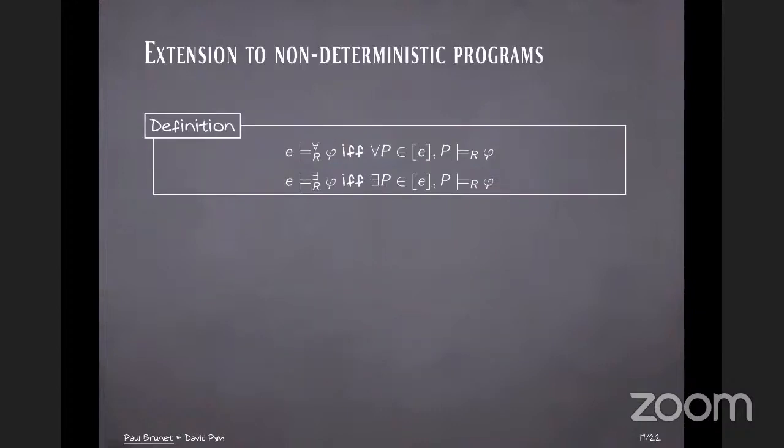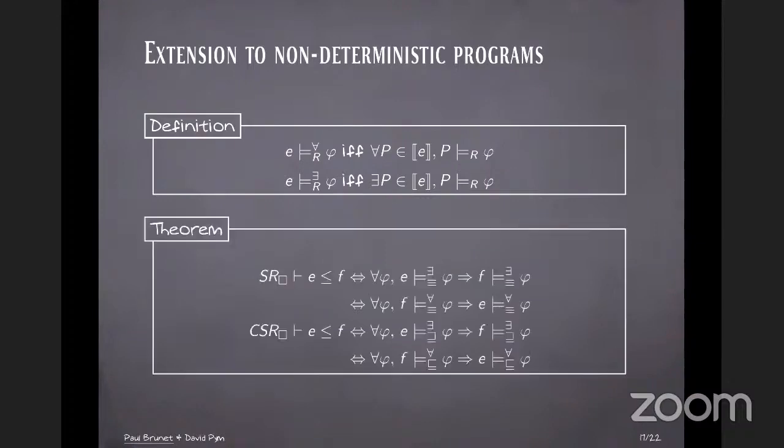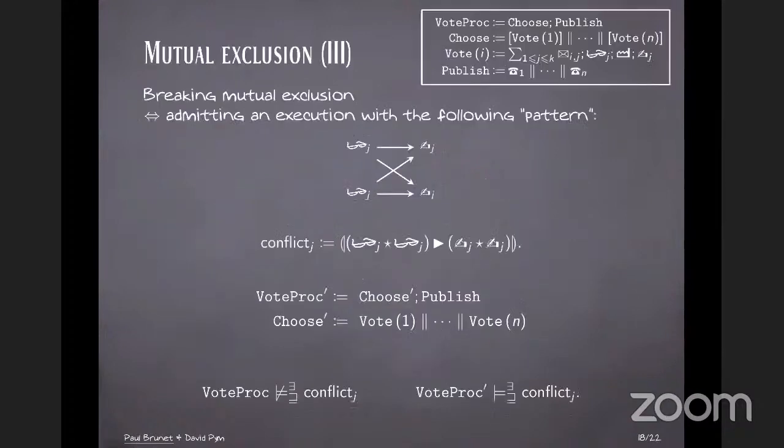Then briefly we can extend this to non-deterministic programs by saying that there's two versions of it. Saying we either satisfy universally or existentially a formula. Either because every Pomset in E satisfies the formula, or there exists a Pomset in E satisfying the formula. And again, we have adequacy theorems. You can look them up in the paper.